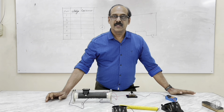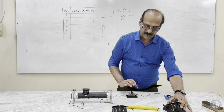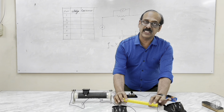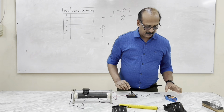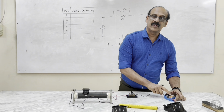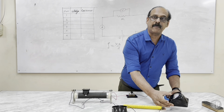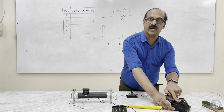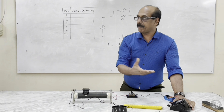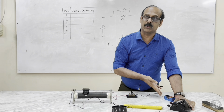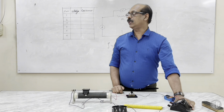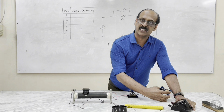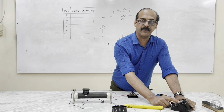Here is the resistance which we are going to determine. This is the cell. This is a milliammeter — a current measuring device. It can also be an ammeter; if we are connecting a very long resistance wire, the current flow will be more and then you have to connect an ammeter. Here we are using a 1.5 volt cell, so we use a milliammeter.